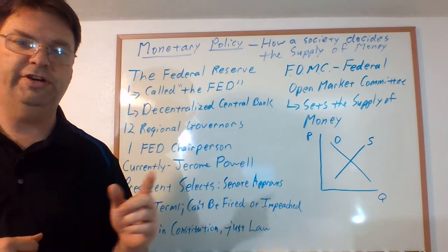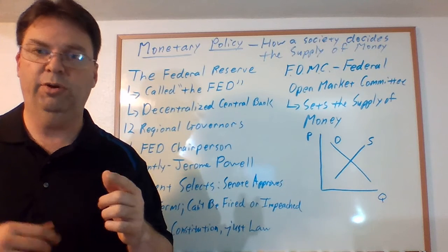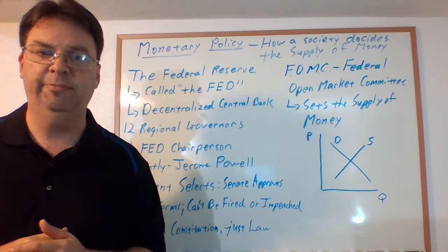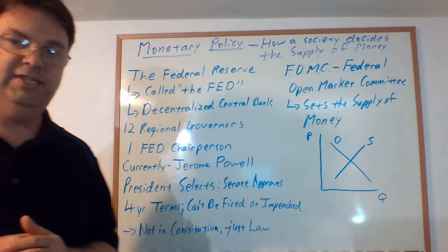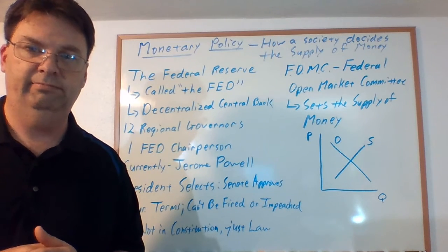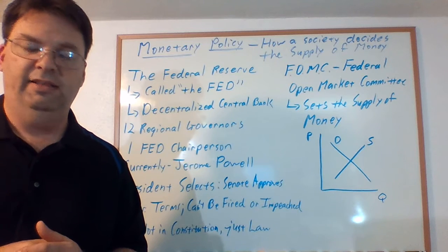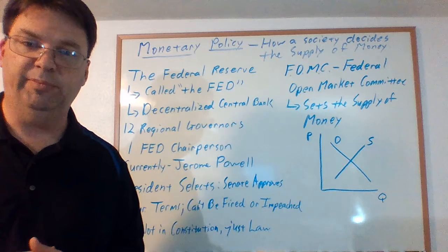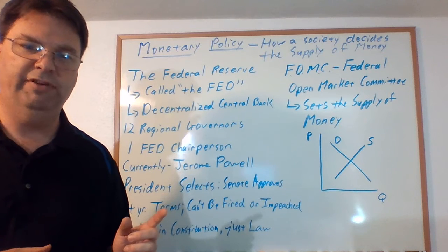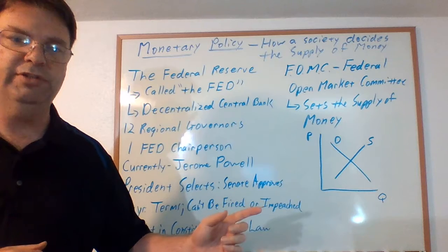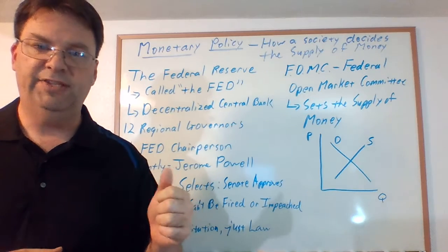Currently our Federal Reserve chairman is Jerome Powell. They rotate every four years — they can be re-selected by the president or someone else can be nominated. The president selects and the Senate approves or disapproves. What's interesting is that once approved, they cannot be fired. It was supposed to be that the Federal Reserve would not represent political interests, yet they are almost always entangled in the political activities of the government. They are like a Supreme Court justice but even more protected — once selected and approved by the Senate, they're in for four years.